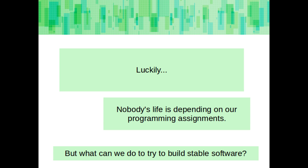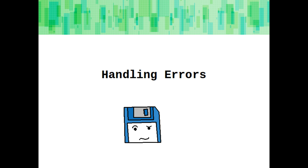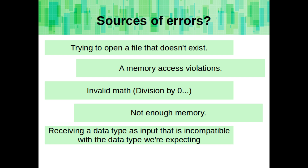Luckily, nobody's life is depending on our programming assignments. But what can we do to try to build stable software? Some errors come from trying to open and read a file that doesn't exist, memory access violations, invalid math, the computer not having enough memory, or receiving a data type incompatible with what we're expecting — like wanting an integer and the user gives us a letter.